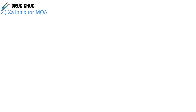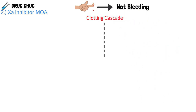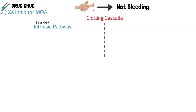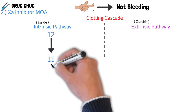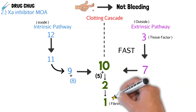Let's figure out how these Factor Xa inhibitors actually work — their mechanism of action. To discuss that we need to talk about the clotting cascade, which is how your body goes from bleeding (say, a paper cut) to not bleeding. As a quick overview, the clotting cascade has two sides: the intrinsic pathway (damage from inside) and the extrinsic pathway (damage from outside). Both pathways activate clotting factors that meet in the middle at Factor 10, which then activates Factor 2, which activates Factor 1 (fibrin).